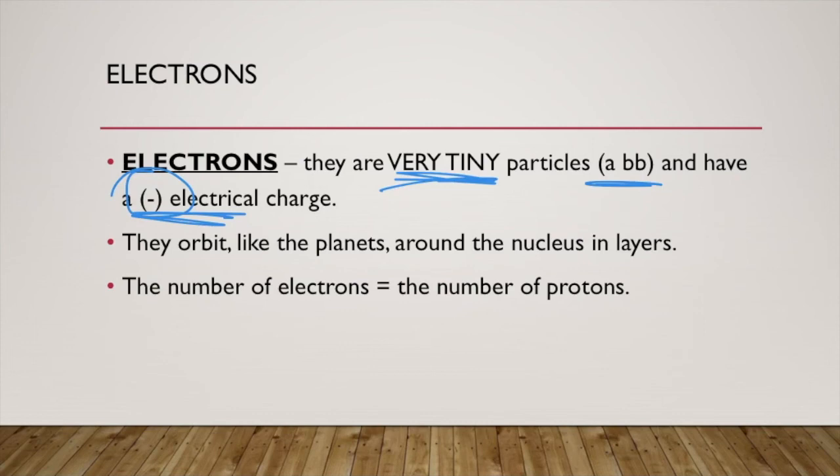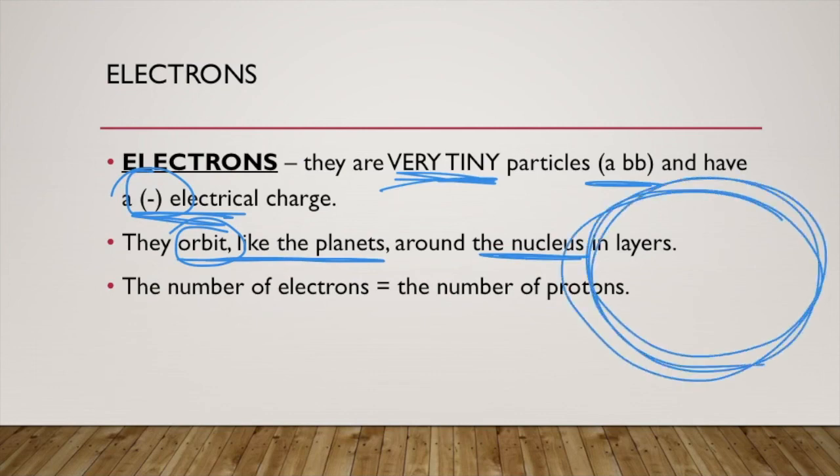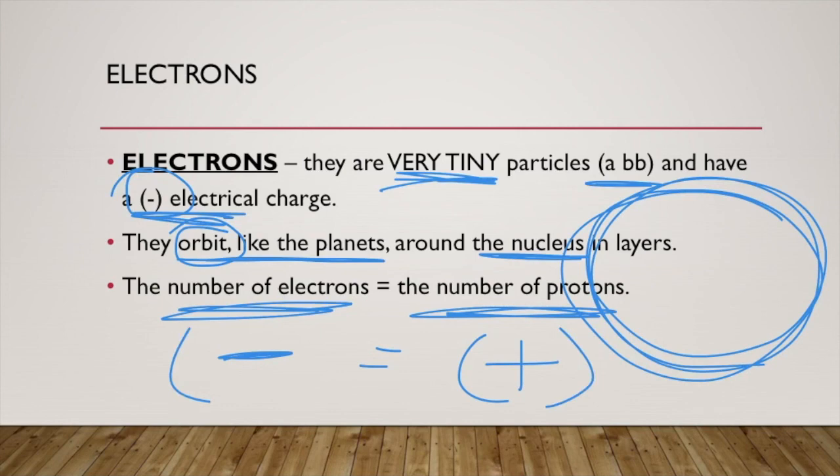Where are they located? They are flying around the outside. We call them orbits, like planets around the nucleus, flying in circles around the outside. The thing about electrons is the number of electrons has to equal the number of protons. The number of negatives equals the number of positives. If you have ten of one, you have ten of the other. That's how they keep the atom in balance.